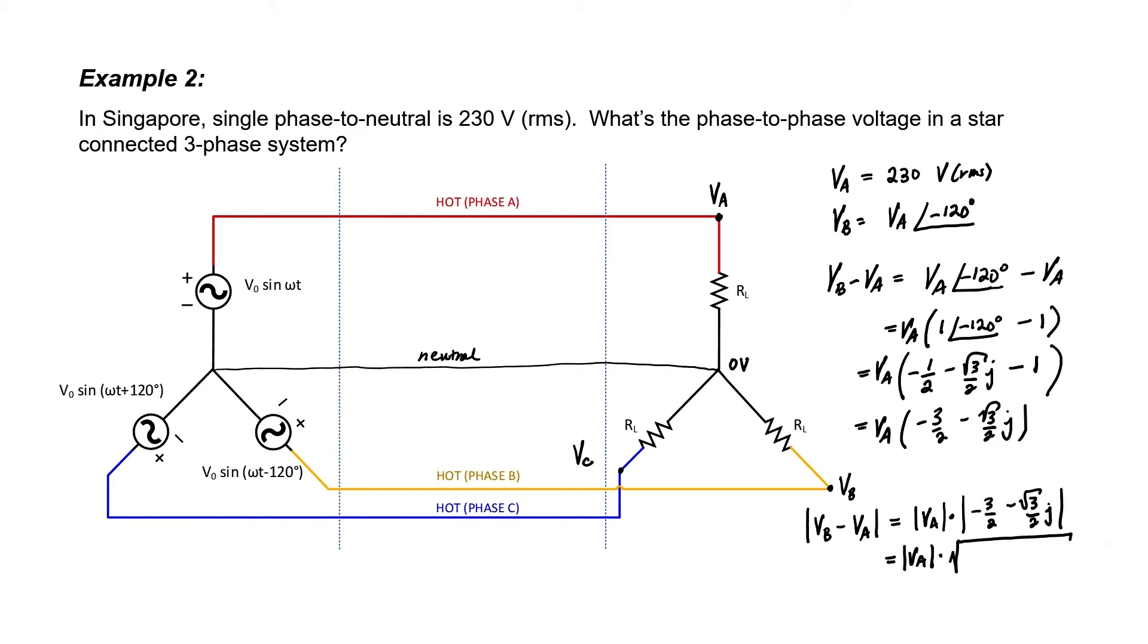We can find the absolute value of a complex number by using the Pythagorean theorem. We'll take the square root of the square of the real part plus the square of the imaginary part. This comes out to the square root of three. If I want to find the phase to phase voltage, all I need to do is multiply that number times the square root of three.